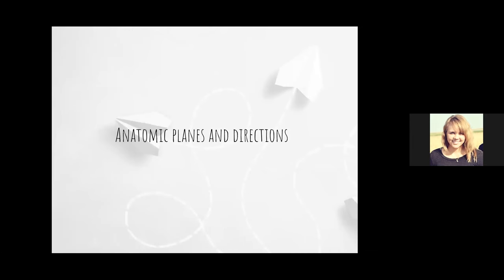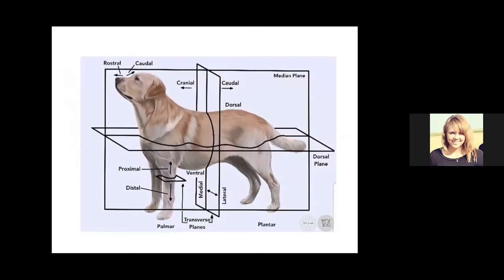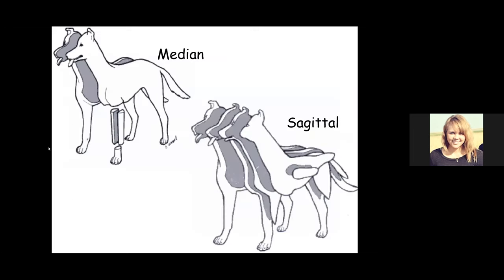First up: anatomic planes and directions. The main planes of motion for the dog — there are three of them. The sagittal plane divides the dog into right and left halves. The dorsal plane divides the dog into top and bottom halves. The transverse plane divides the body into front and back halves. The median plane is an imaginary slice right through the middle; if we're off exact midline, we call it a sagittal plane.